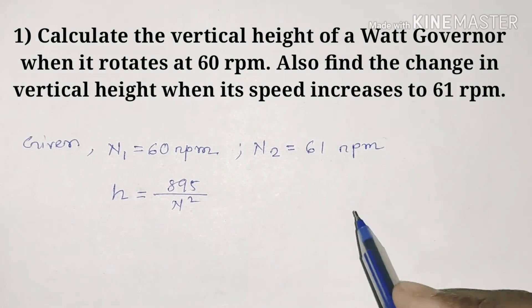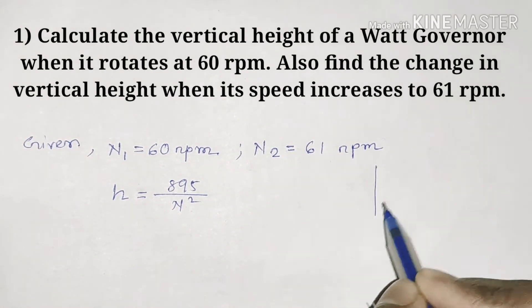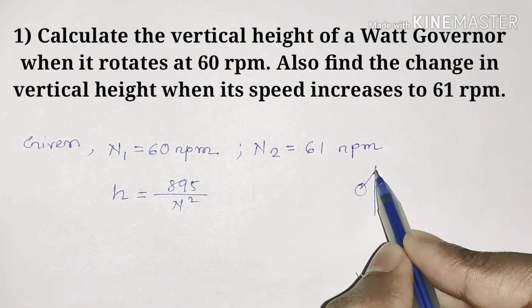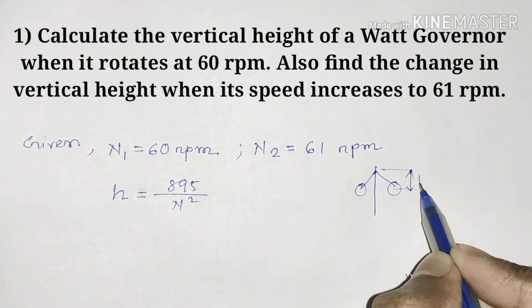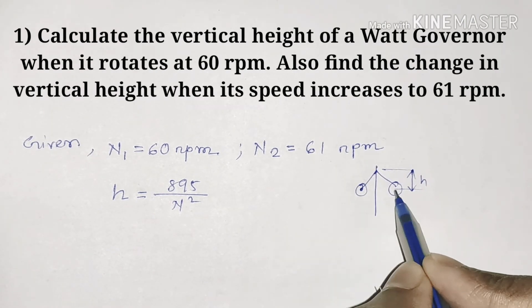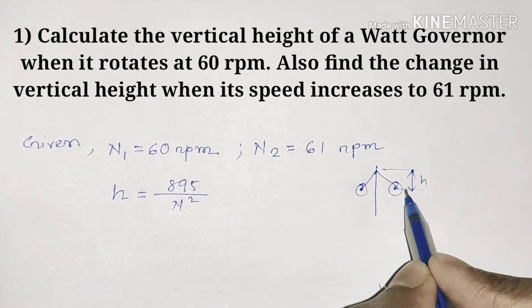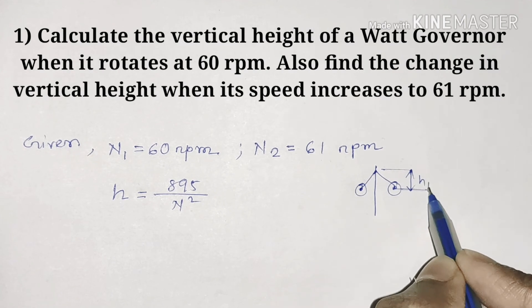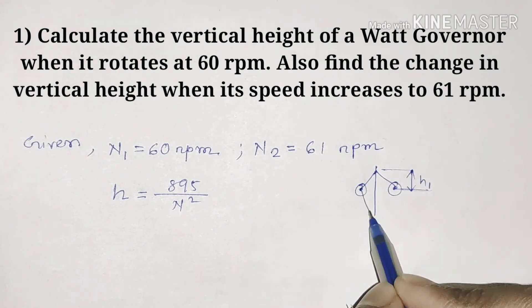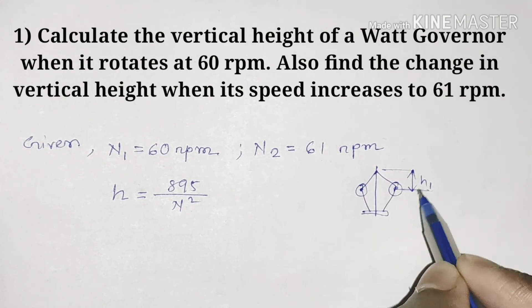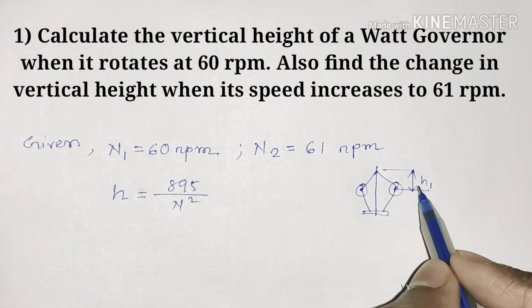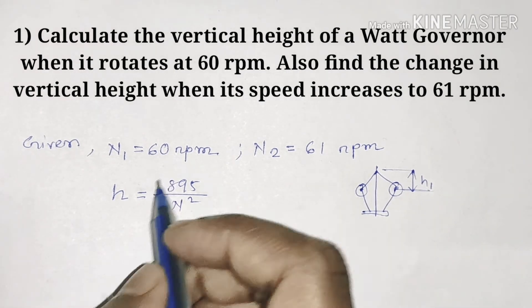I will draw here. This is our governor, this is our height. First, our governor is at this height, this is h1. Our governor is rotating at rpm N1, which is 60 rpm.